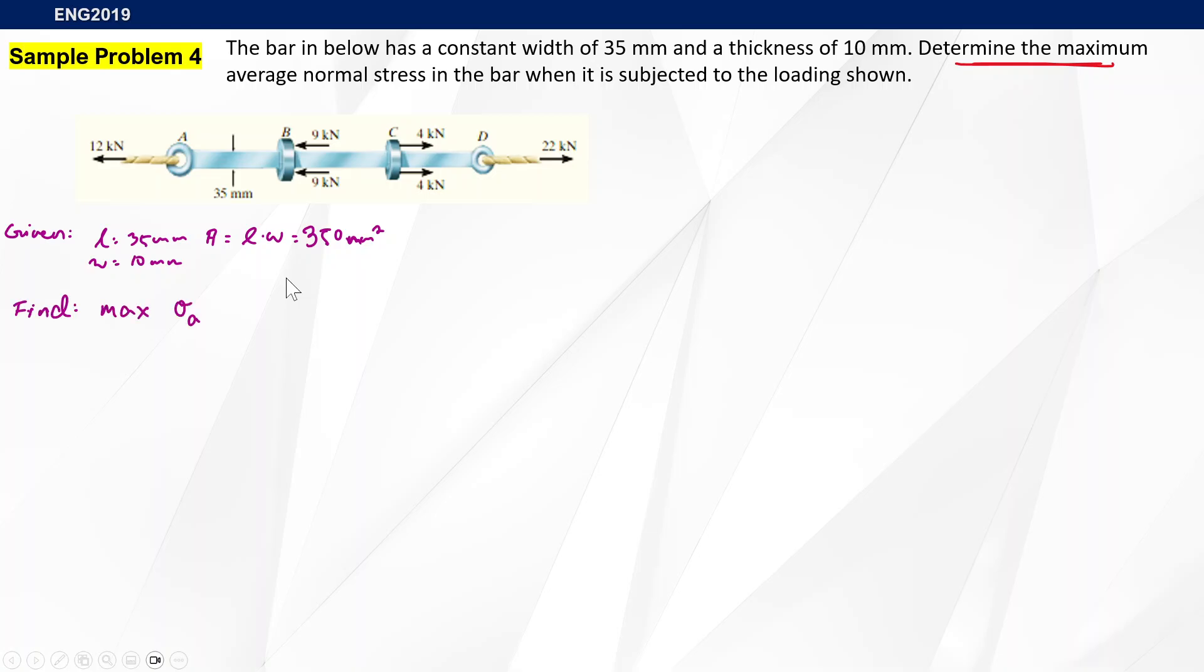We're required to find the max normal stress. Recall that average normal stress is force over applied perpendicular area. We have a lot of loads, which means we have to find which segment has the greatest amount of force. From there we can determine the maximum amount of stress. We can solve it by segments: AB, BC, and CD. To find max stress means finding where the max load is.